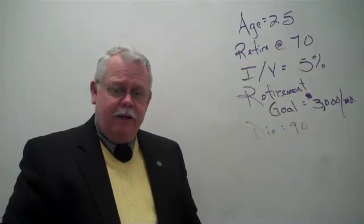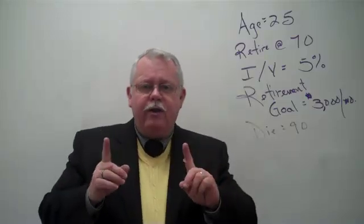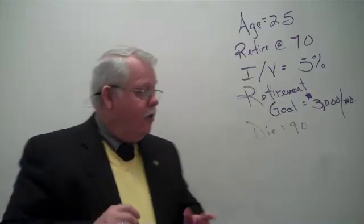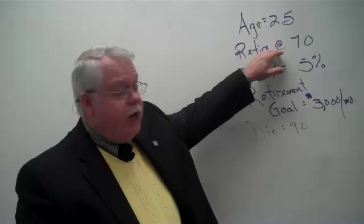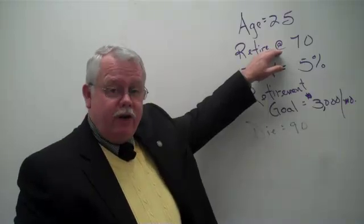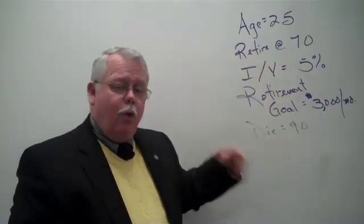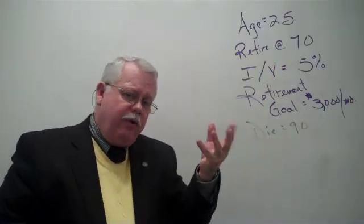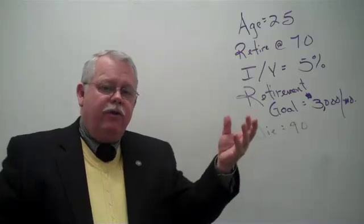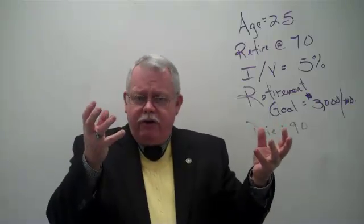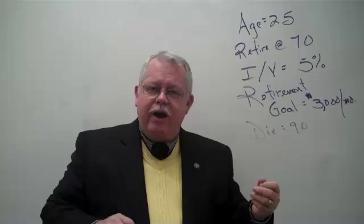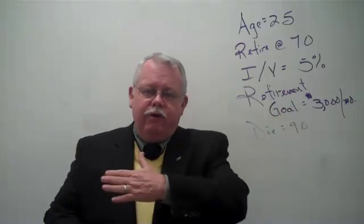All right? Let's see how this works. It's a two-part calculation. First, we have to calculate how much money he's going to need when he gets to be 70 so he can pull out $3,000 a month for 20 years. So what does he need when he's age 70? Once we figure that out, then we'll figure out what does he need to save starting today to build up to that amount. So we kind of work backwards in a sense.